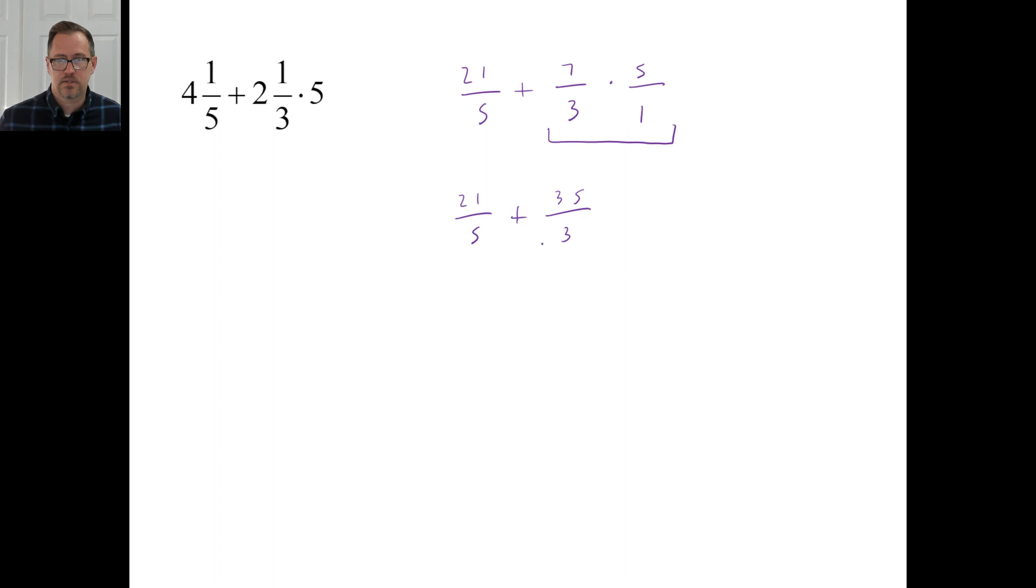Five times three, so twenty-one times three is sixty-three. Three times five, so thirty-five times five is one hundred seventy-five. So sixty-three plus one hundred seventy-five is two hundred thirty-eight divided by fifteen.